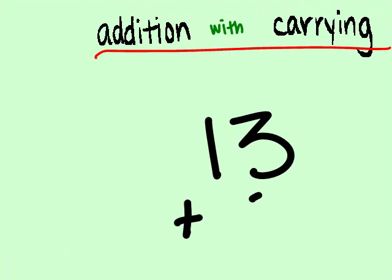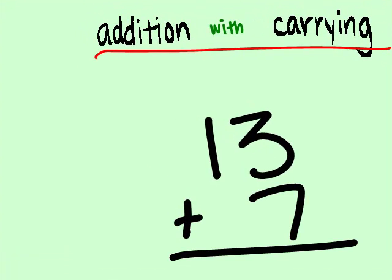13 plus 7. In a problem like this, when the addends don't have the same number of digits, it is acceptable to add a zero in front of any number with fewer digits than the other. It is not, however, acceptable to add a zero to the end of a number because this will change the value of the number and the sum.